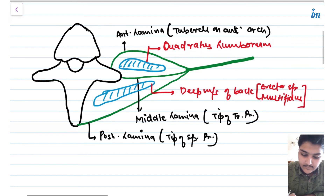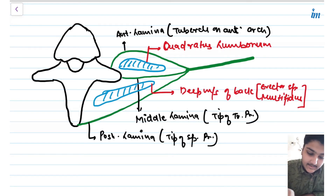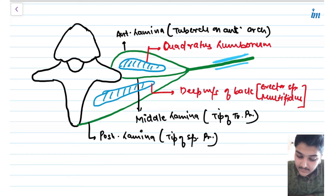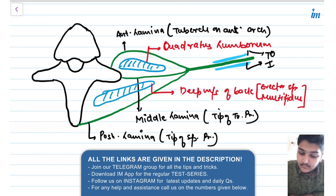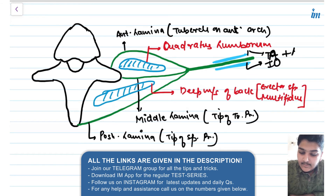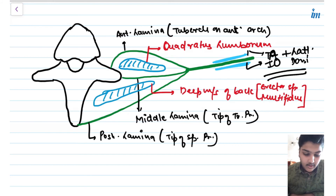Now, what are the muscles that take origin from the Thoracolumbar fascia? There are a few muscles — for example, transversus abdominis, internal oblique, and latissimus dorsi. It's not that these muscles take origin from the TLF only; they also have other origins besides the TLF.